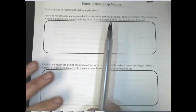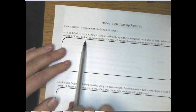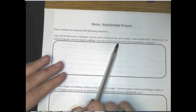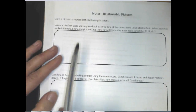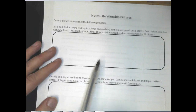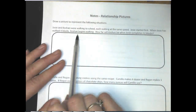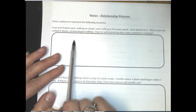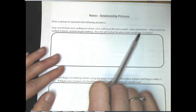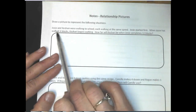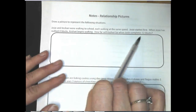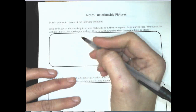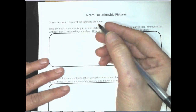We talked about Josie and Kashari walking to school, each walking at the same speed. One of these is an additive and one is a multiplicative relationship. This one is an additive relationship — let's see if we can figure out why. Josie started first. When Josie has walked four blocks, Kashari begins walking. How far will Kashari be when Josie completes 12 blocks? I really acted this out in class.